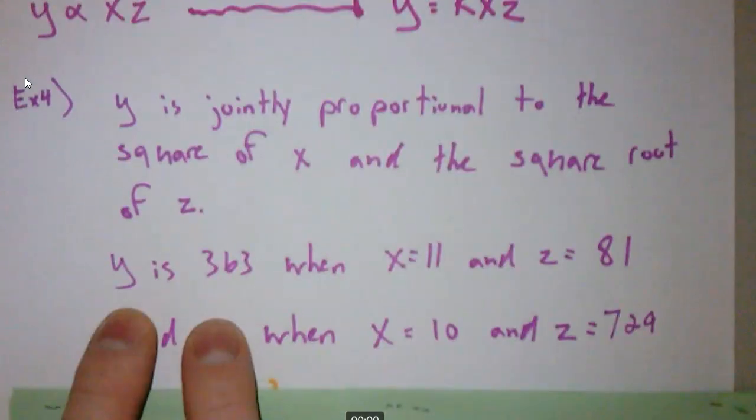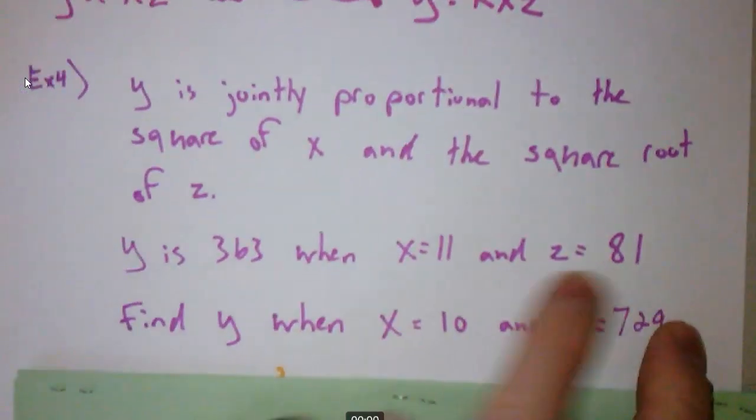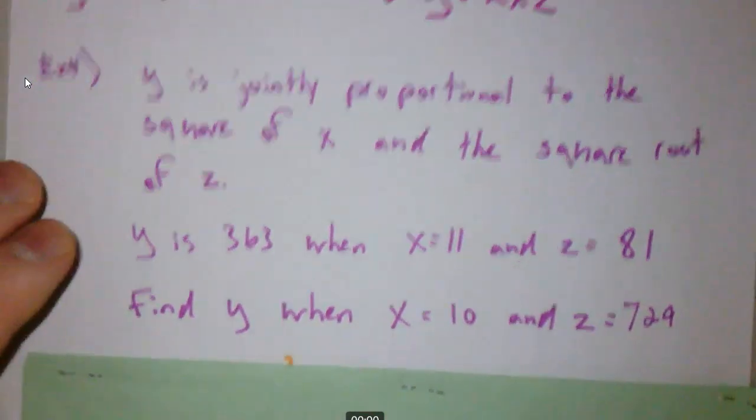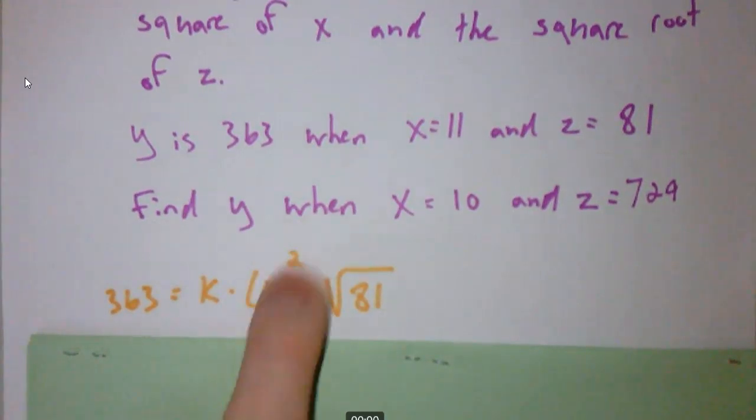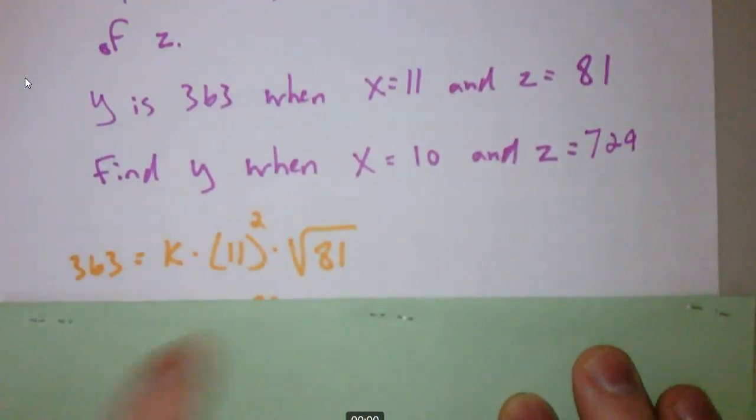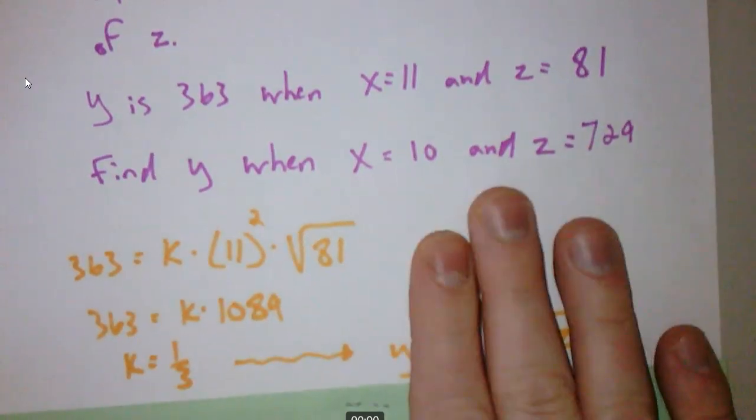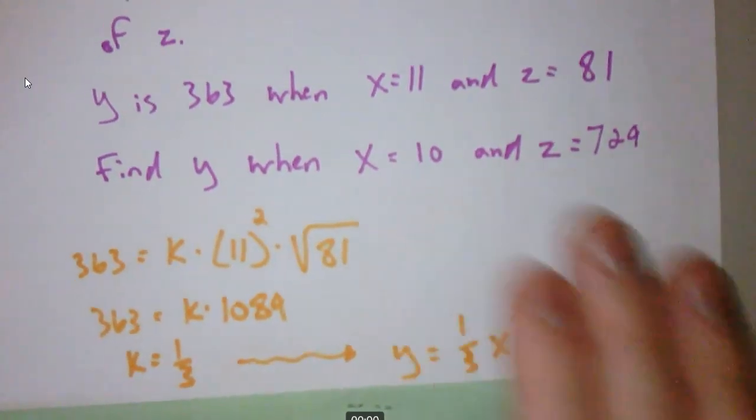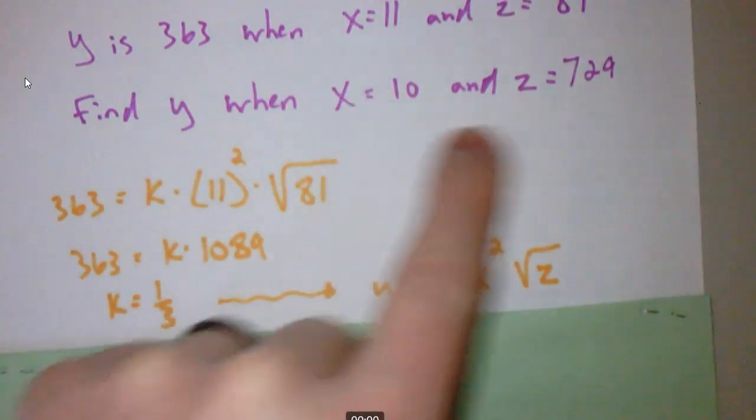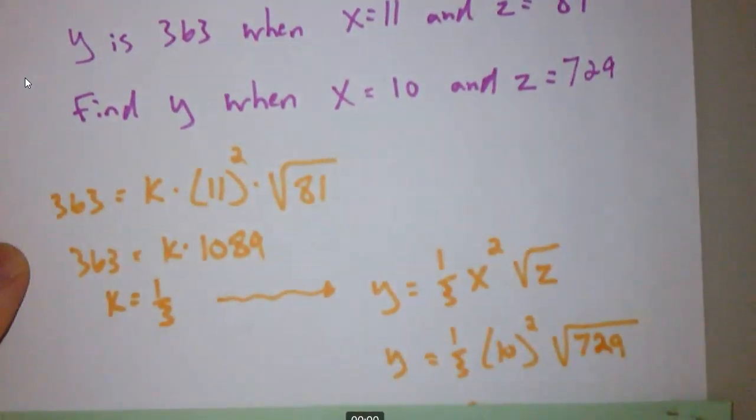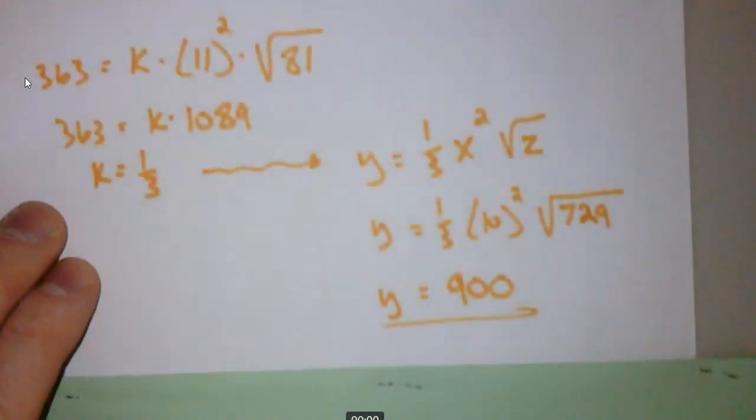Here's the information given to me, first of all. Y is 363 when I have these two things. These data points all point me towards what k value I need for this particular problem. Then once I have the k value, I can solve whatever problem they're giving me. So here's the equation. I skipped the proportionality statement here. Naughty Mr. Edwards. But we knew y was 363 when x was 11, x squared, and z was 81. Square root of z. All that stuff that was set up there, you have to remember those here. We can go through and figure out what k is. k ends up being a third. Now that we know k is a third, I can write my working formula, my working equation, and solve whatever I need to solve. It says find y when x is 10 and z is 729. I'll just plug those numbers in there, rip it through my calculator, and you get 900.